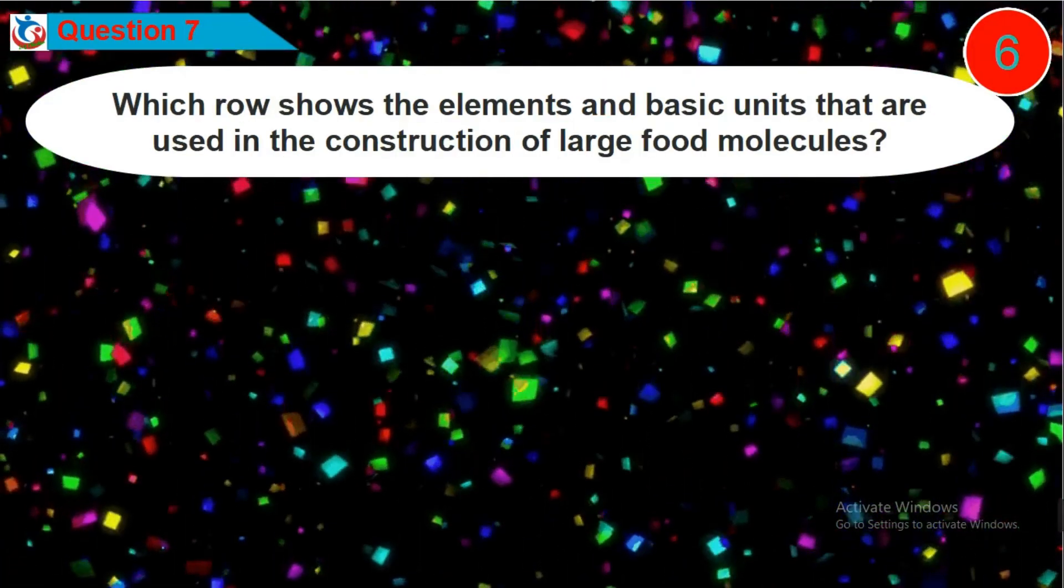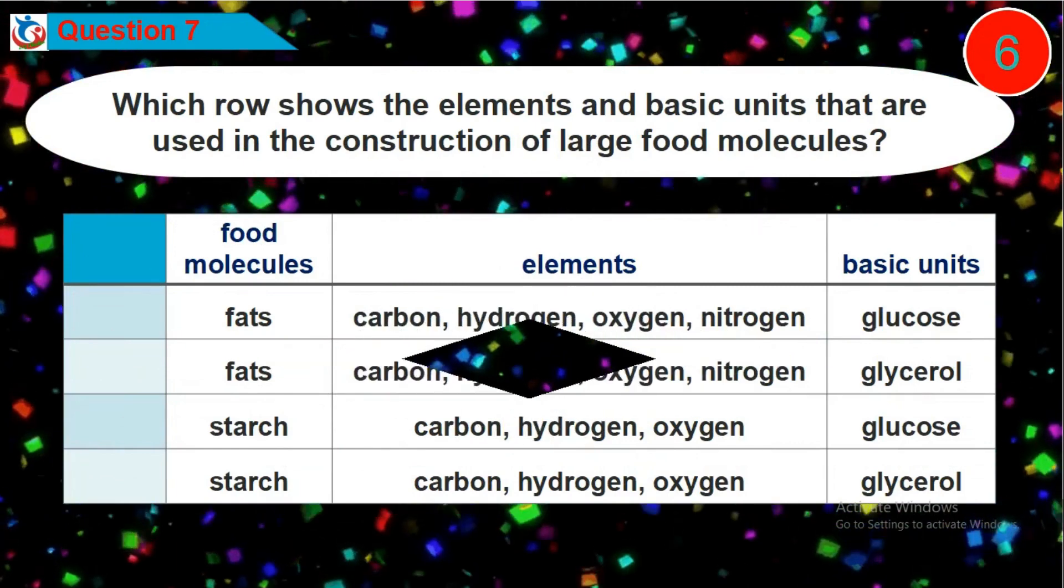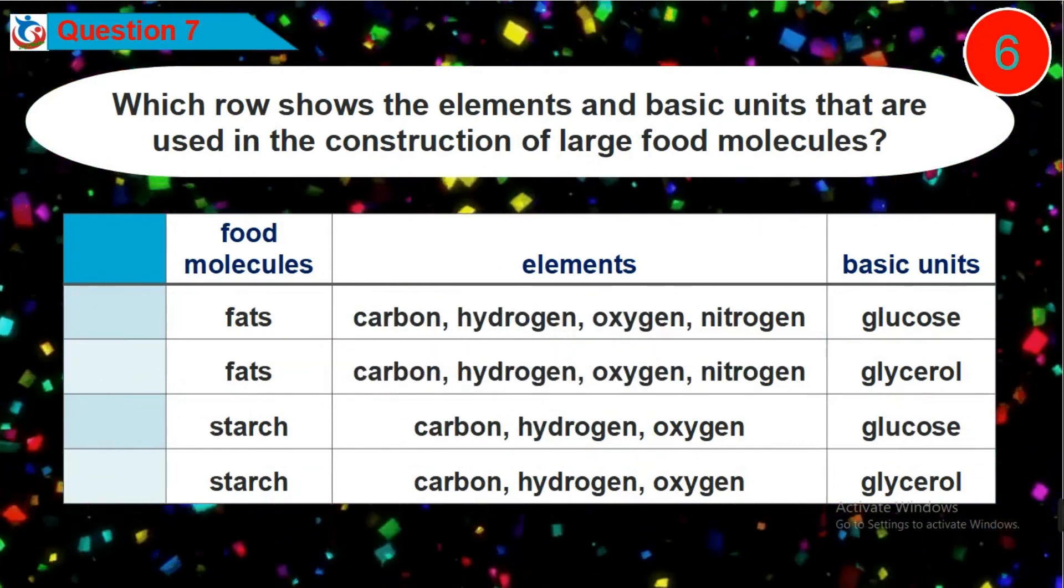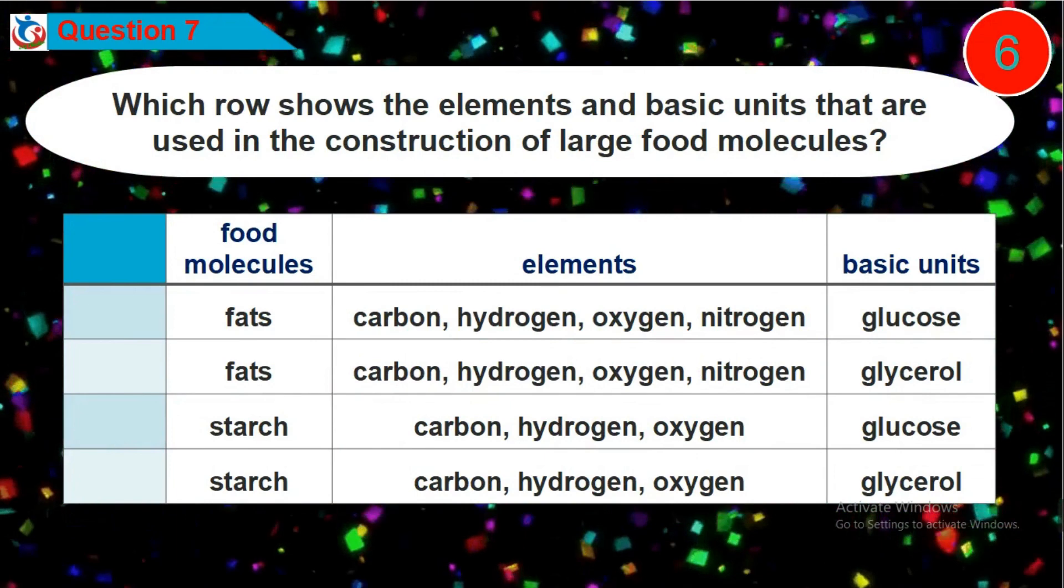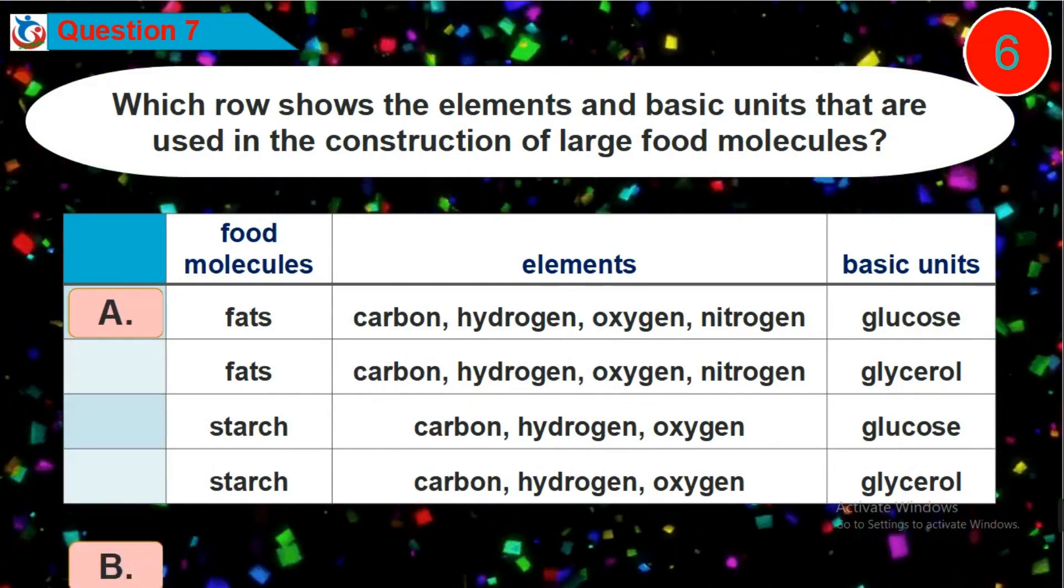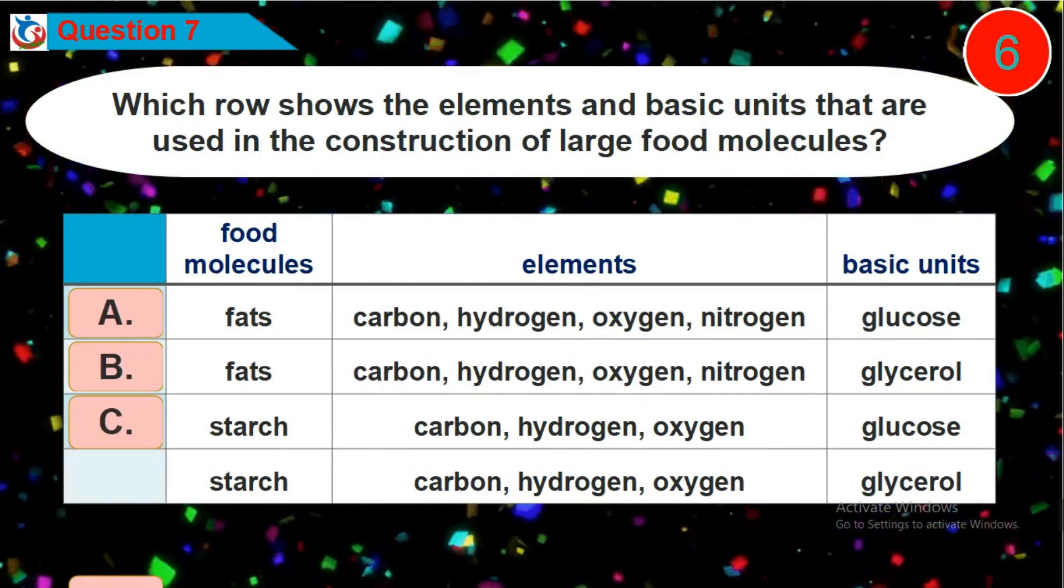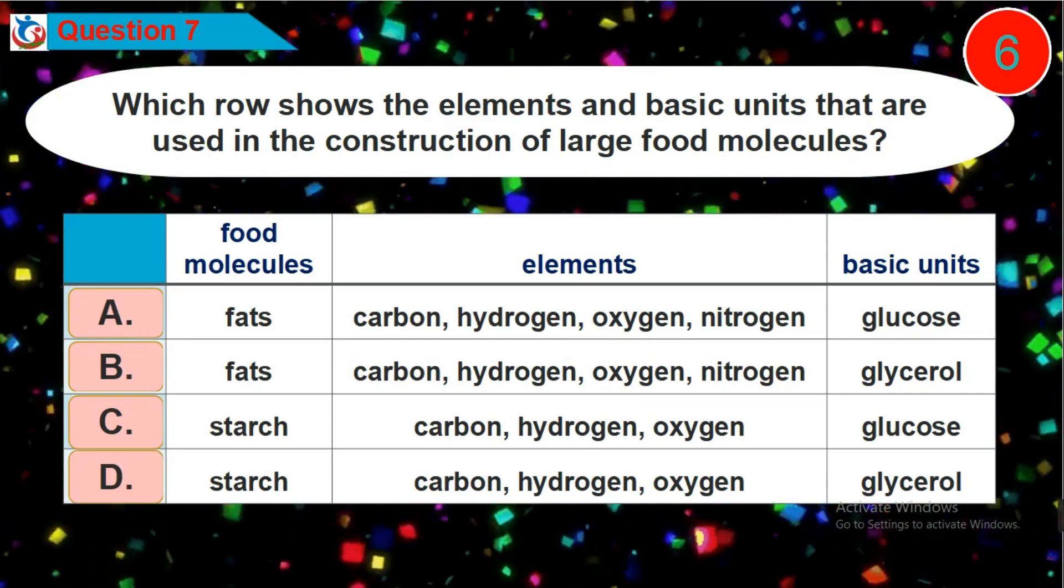Question 7. Which row shows the elements and basic units that are used in the construction of large food molecules? Is it option A, B, C or D?